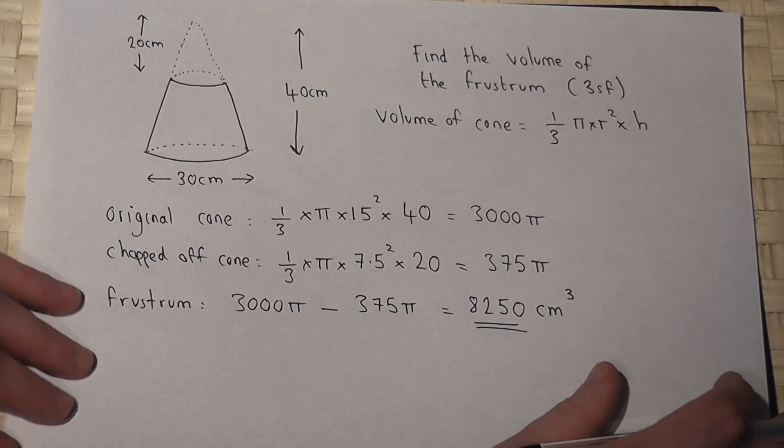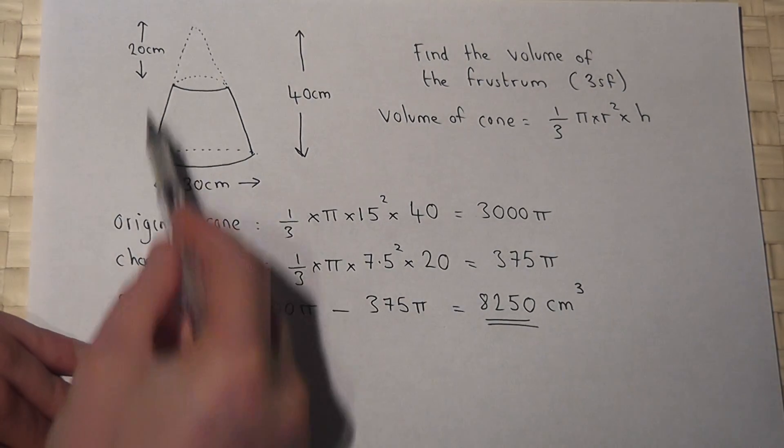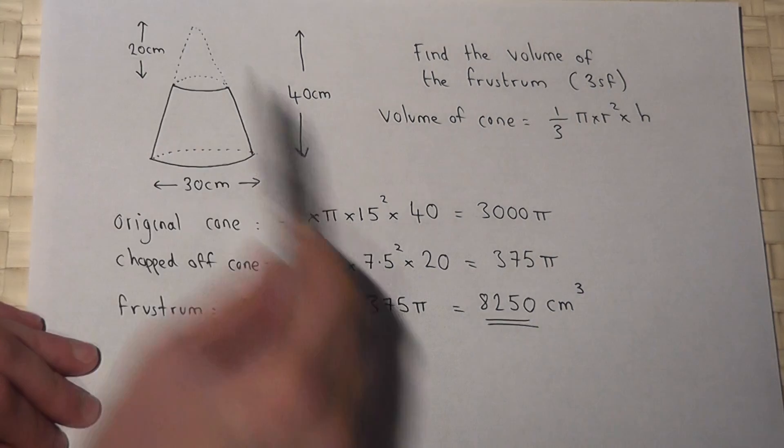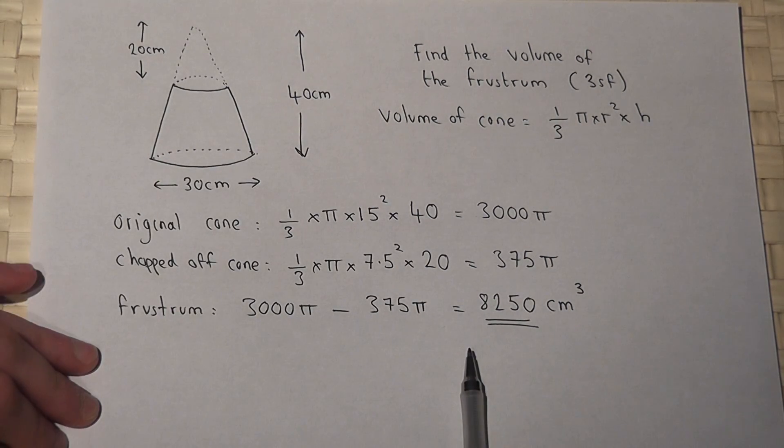And there we go. We've found the volume of the frustum, which is a large cone with a smaller cone chopped off the top. And there we go. Thank you.